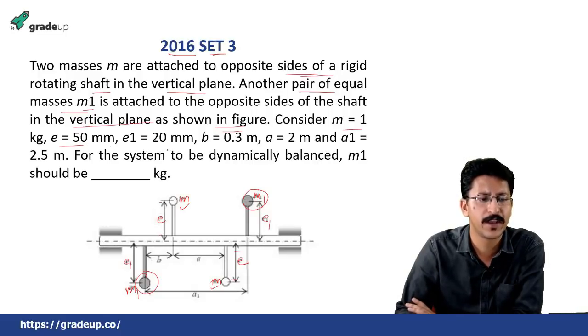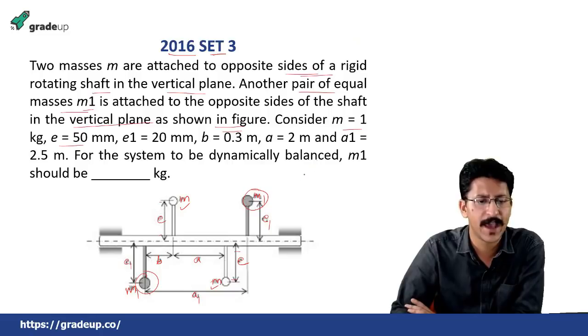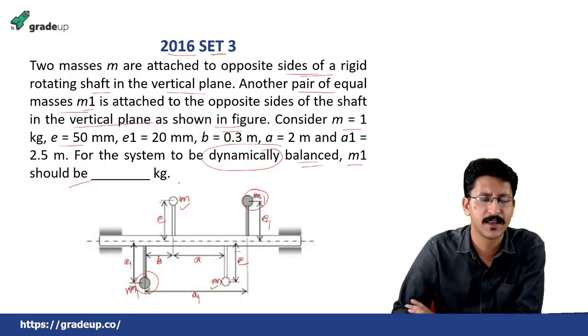So e equal to 50 mm, e1 equal to 20 mm, b, this is b, given as 0.3 meters, this is a, given as 2 meters and a1 equal to 2.5 meters. For the system to be dynamically balanced, the m1 should be, it is asking about the dynamic balancing.